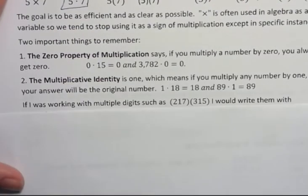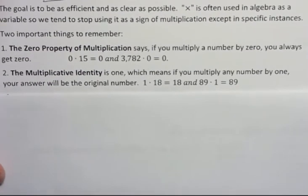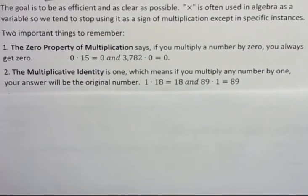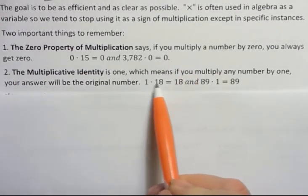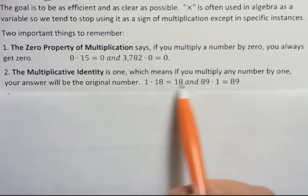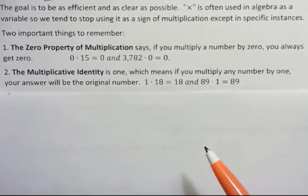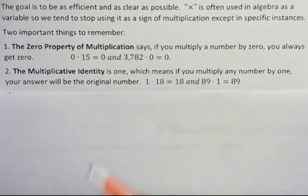The second thing I wanted to remind you about was the multiplicative identity, which is 1. And what that means is that if you multiply any number by 1, your answer will be the original number. For instance, 1 times 18 is 18, and 89 times 1 is 89. So multiplying by 1 doesn't change the original number. And we use that for many different things in math. We use that concept. So it's an important thing to remember.